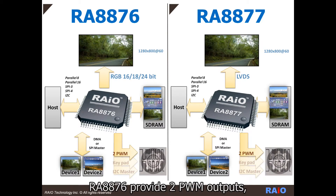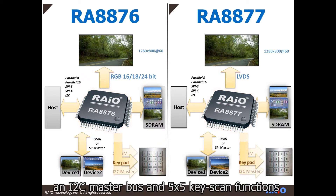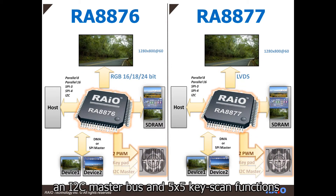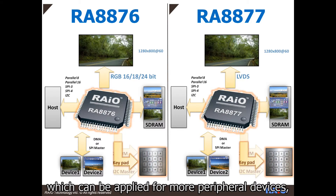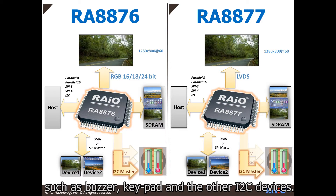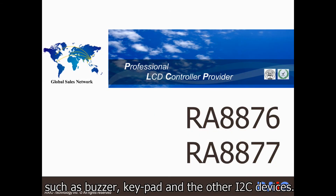In addition, RA8876 provides two PWM outputs, an I2C master bus, and 5x5 key scan functions, which can be applied for more peripheral devices such as a buzzer, keypad, and other I2C devices.